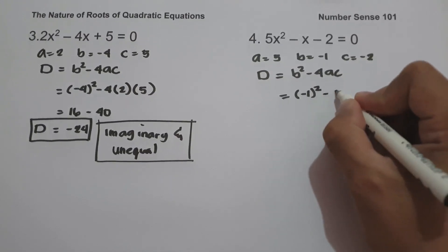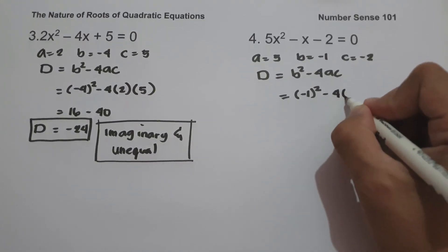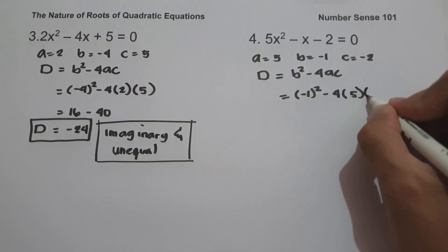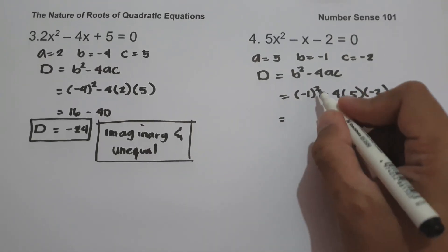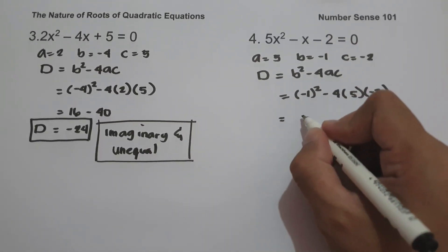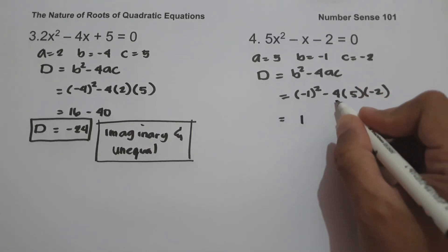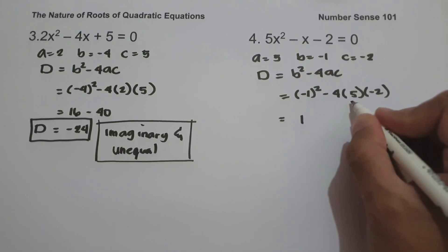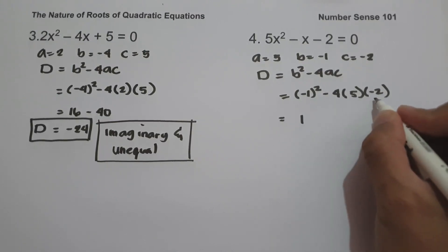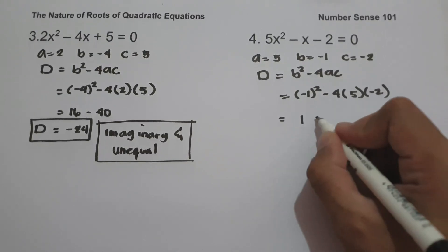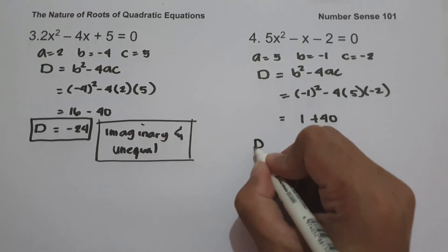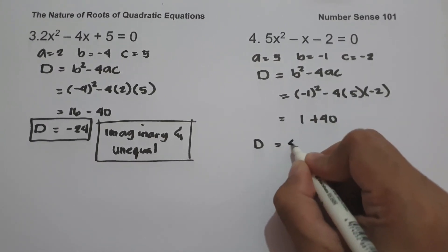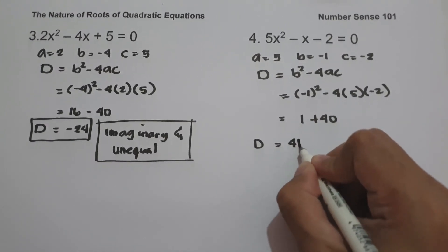So we are going to have negative 1 squared minus 4 times a, that is 5, and c is negative 2. Negative 1 squared is positive 1. Negative 4 times 5 is negative 20, and negative 20 times negative 2 is positive 40. So the discriminant is 1 plus 40, that is 41.